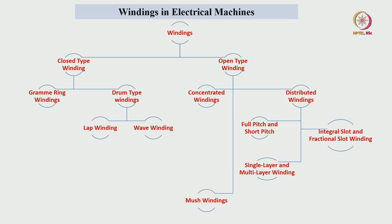These are the different types of windings with respect to DC machines as well as AC machines. The closed type of windings are utilized in DC machines where commutators and brushes are used. Open type windings have no brushes and commutators. The closed type is classified into gram ring winding and drum type winding. The gram ring winding is the oldest type, where only half the windings participate in effective energy conversion — the remaining half are not utilized for torque generation, making copper utilization poor. Copper utilization in drum type winding is high.